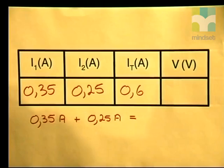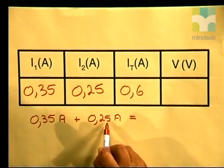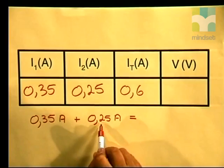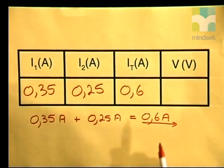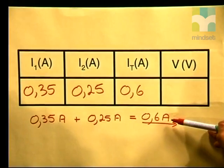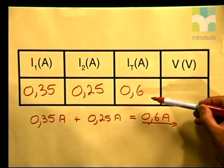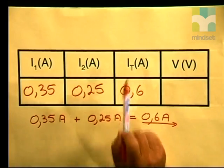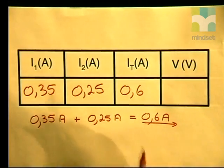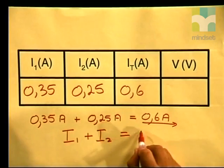Let's now add up the currents that pass through branch 1 and branch 2. If we add up I1, which is 0.35 amperes, and I2, which is 0.25 amperes, 0.35 plus 0.25 gives us 0.6 amperes. This value is exactly the same as the current passing through the ammeter measuring the current supplied by the battery. Therefore, the current supplied by the battery IT is the sum of the currents of each branch — I1 plus I2 equals IT.